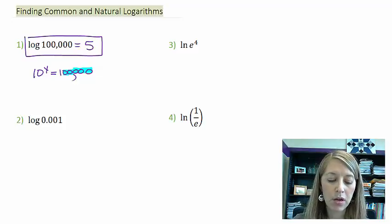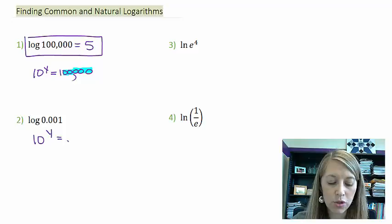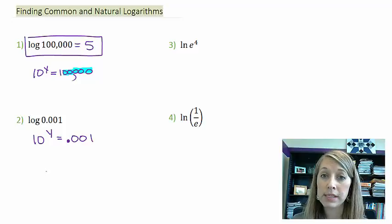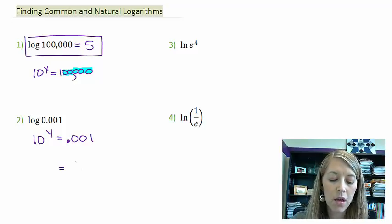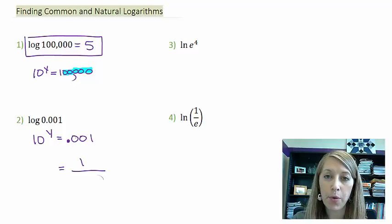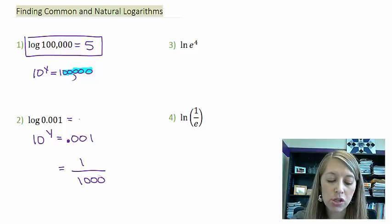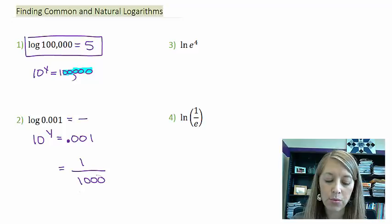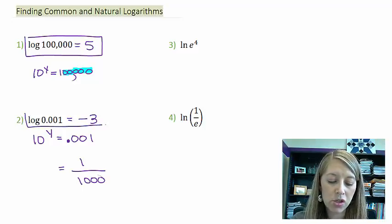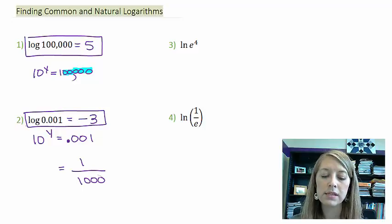Number two is very similar. Ten to what power is equal to 0.001? I know it's going to be reciprocal because that's going to give me the fraction. One over what gives me 0.001? It is one thousandth because we're in the thousandths place. Ten to what power gives us one over this? I know my answer is going to be negative because I'm in the denominator. I see three zeros. So ten to the negative three power is one over 1,000 or 0.001. My answer here: log of 0.001 is equal to negative three.